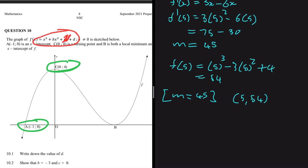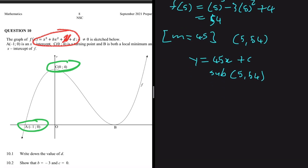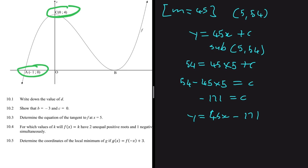Using y = mx + c with m = 45 and point (5, 54): 54 = 45(5) + c, so c = 54 - 225 = -171. Therefore the equation of the tangent is y = 45x - 171.